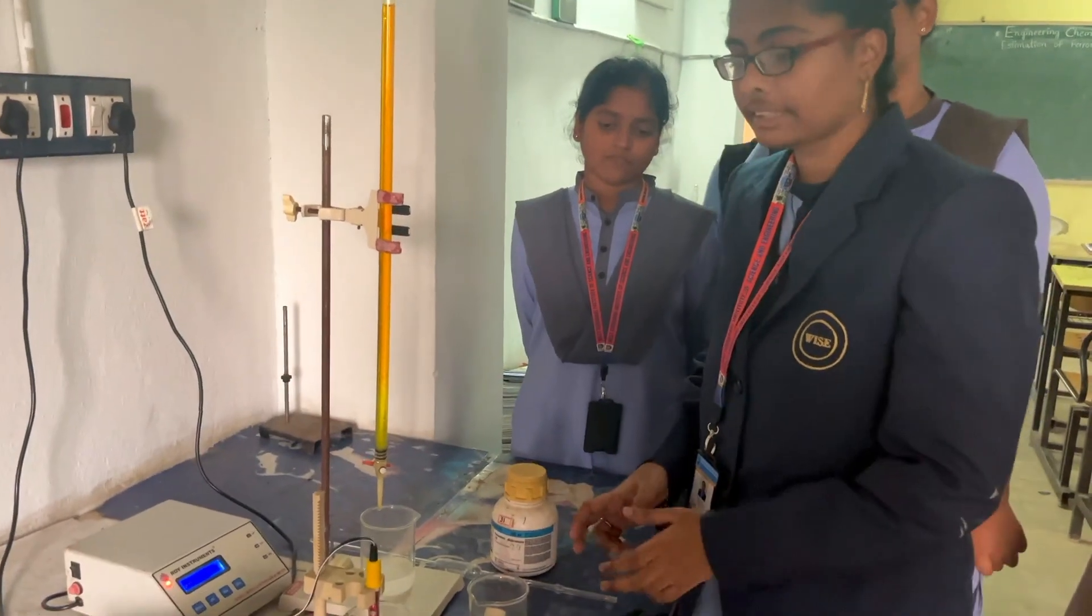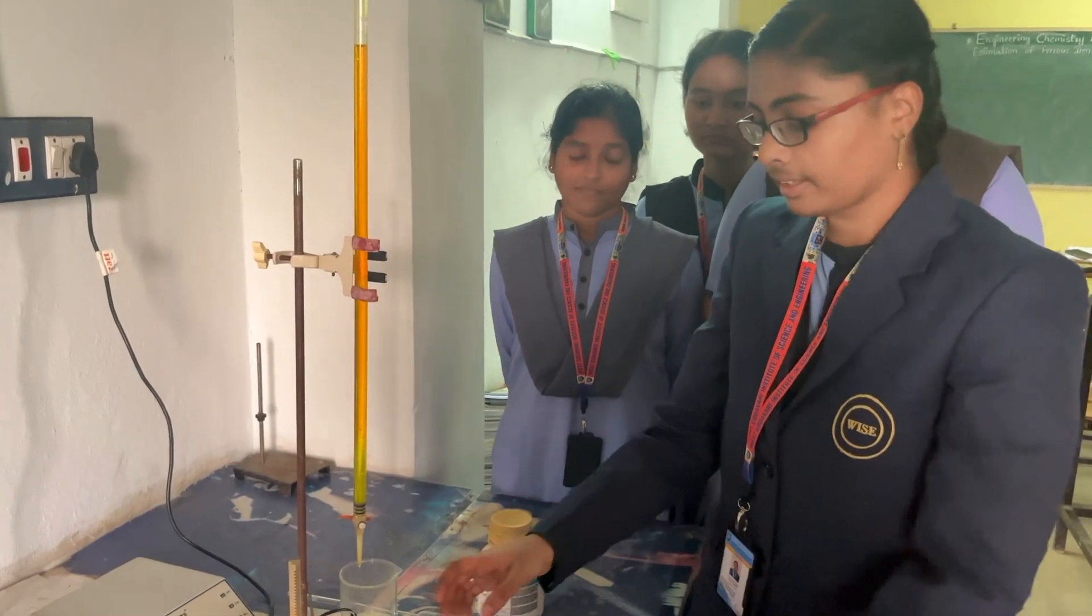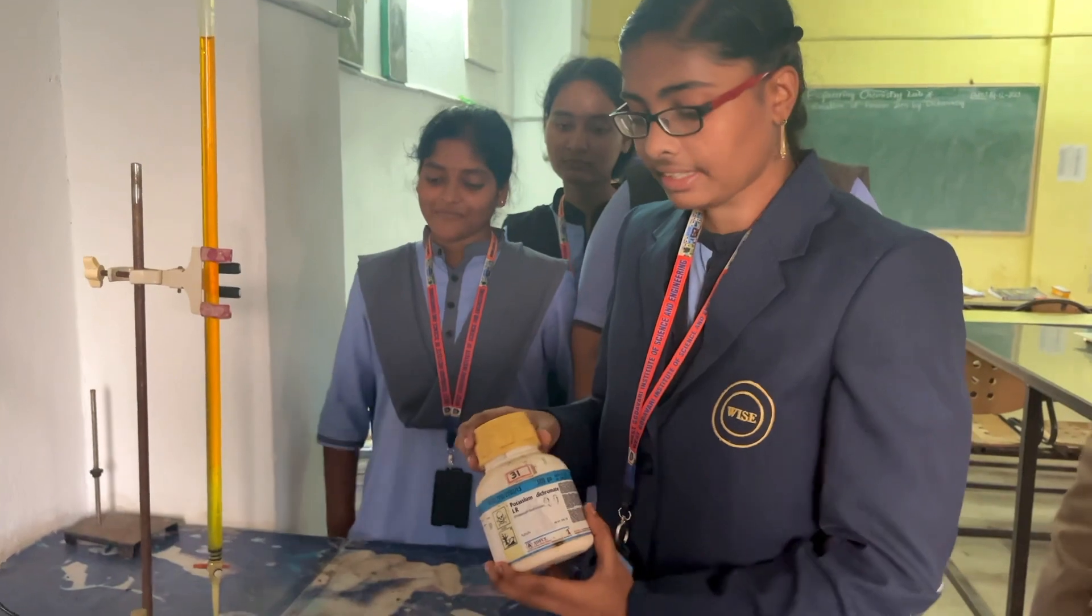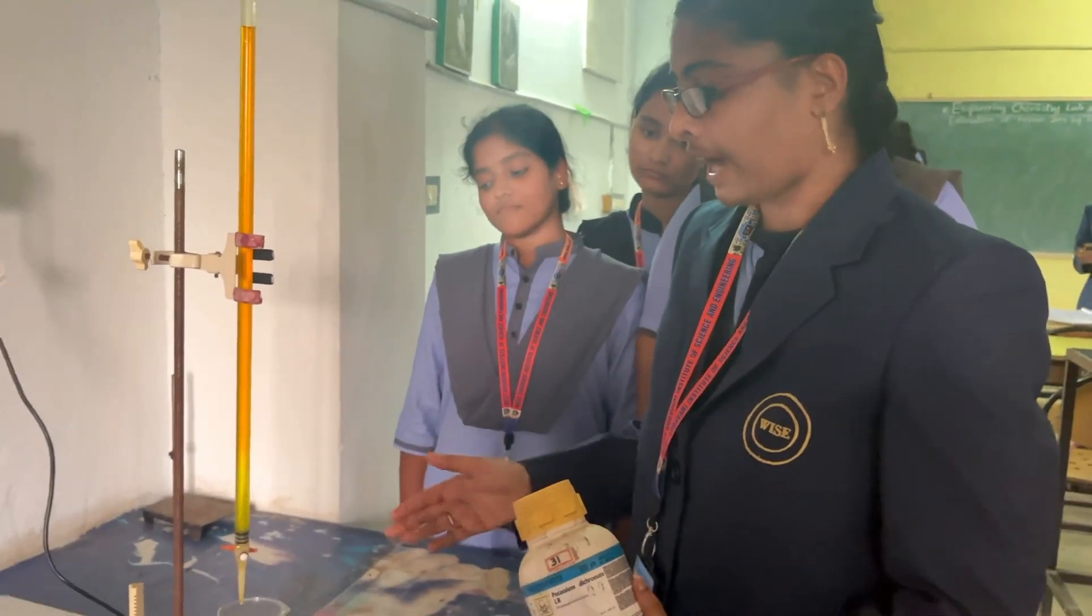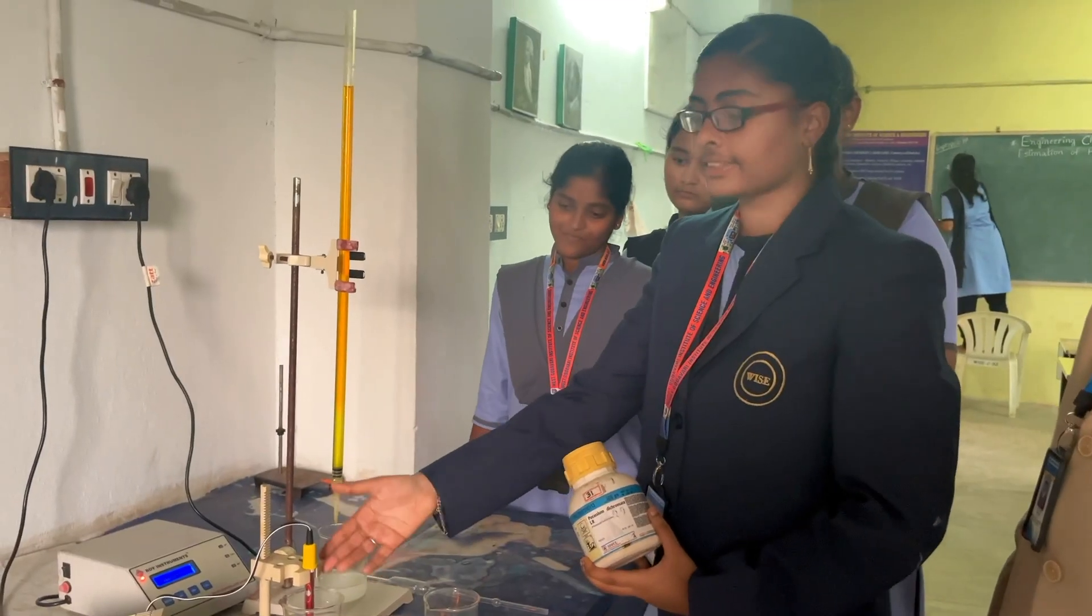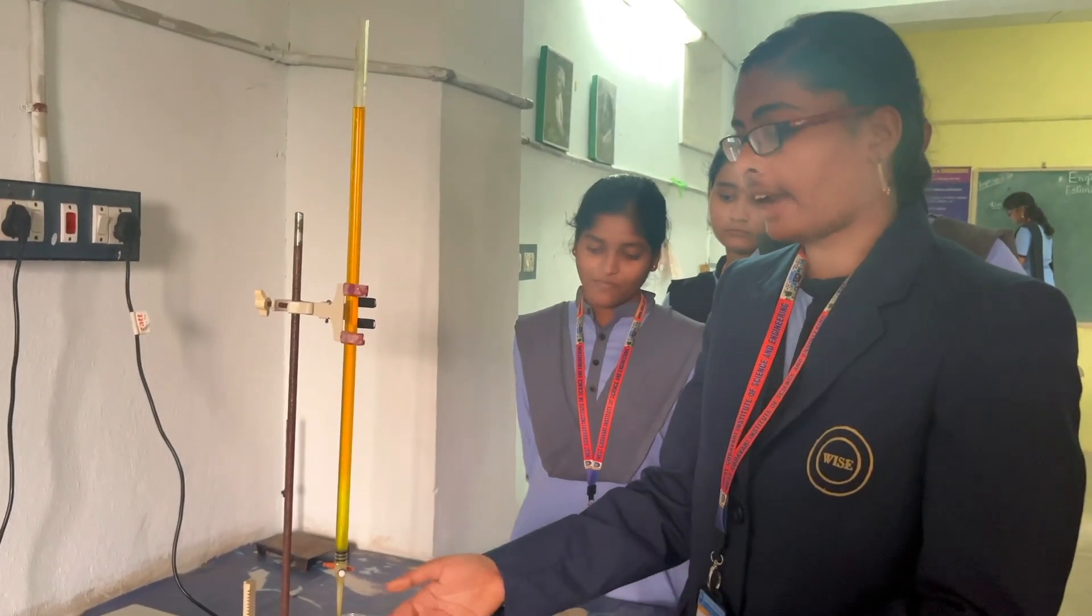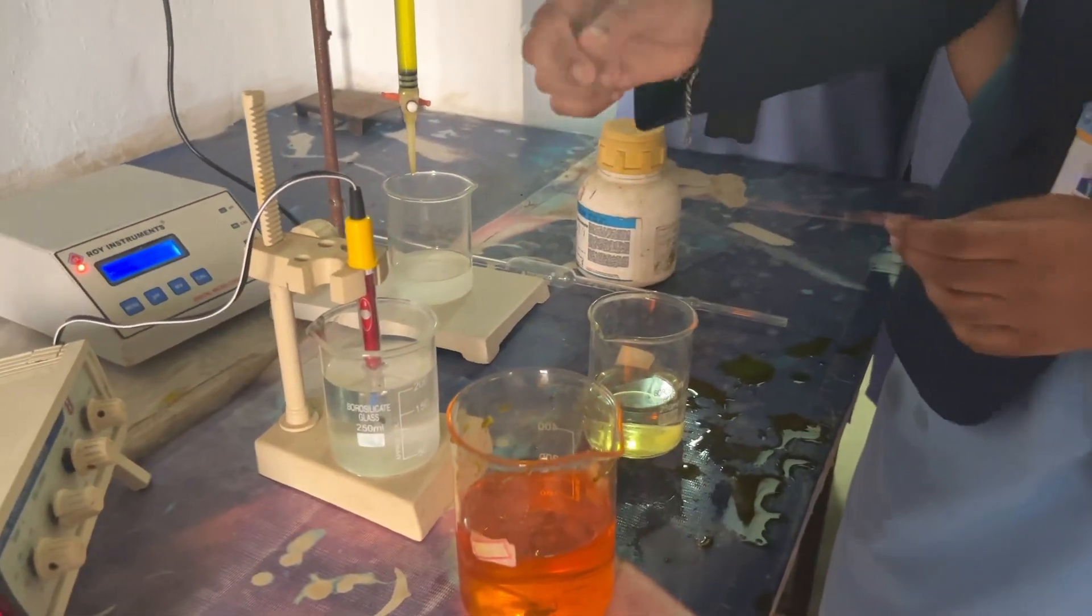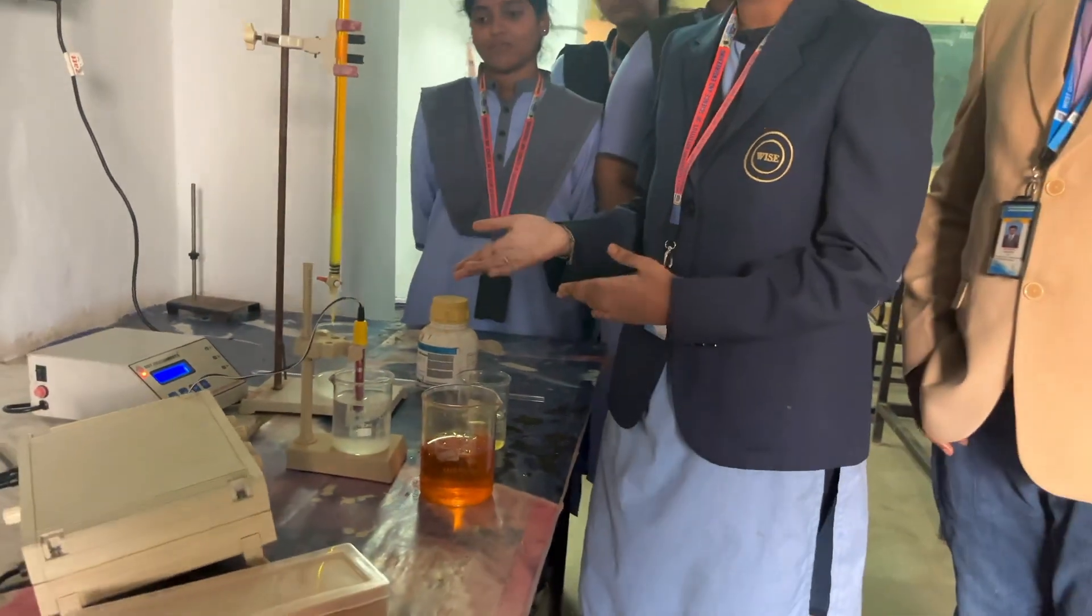Now we have to take the ammonium iron sulfate and add it into the burette, and we have to add potassium dichromate into the beaker. We have to calculate the readings, record them, and draw the graph.